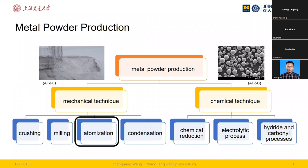Metal powders are very important in many industrial applications. For example, they are the raw material for metal 3D printing and many other additive manufacturing techniques. They also help the development of new nanoscale and microscale materials. Based on the needs of different applications, there are different metal powder production methods, which can be categorized as either mechanical or chemical techniques.